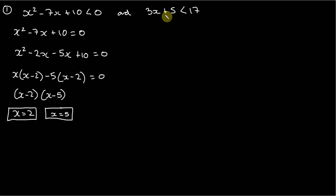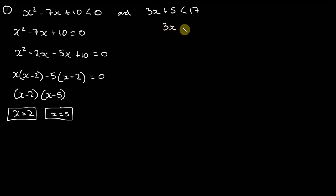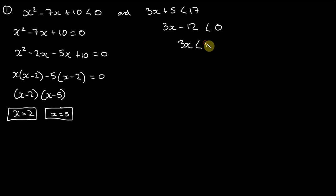Now I'm just going to work on this second inequality. It's a curious one in that we don't have a quadratic — it's a line. What we could do is subtract 17 from both sides, giving us 3x minus 12 is less than 0. Now we can solve for x: add 12 to both sides to get 3x is less than 12, then divide by 3, so x is less than 4.